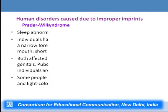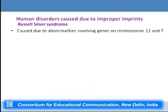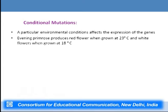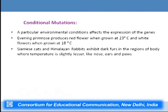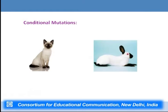Defects in imprinting in humans lead to syndromes such as Prader-Willi syndrome, Angelman syndrome, Beckwith-Wiedemann syndrome, and Russell-Silver syndrome. The final topic is conditional mutation, where environmental factors play a role in gene expression. For example, evening primrose produces white flowers at 18°C and red flowers at 23°C. Similarly, Siamese cats and Himalayan rabbits exhibit dark fur in regions of the body where temperature is lower, because the enzyme responsible for pigment production is functional only at low temperature — illustrating how conditional mutations cause variation in gene expression.